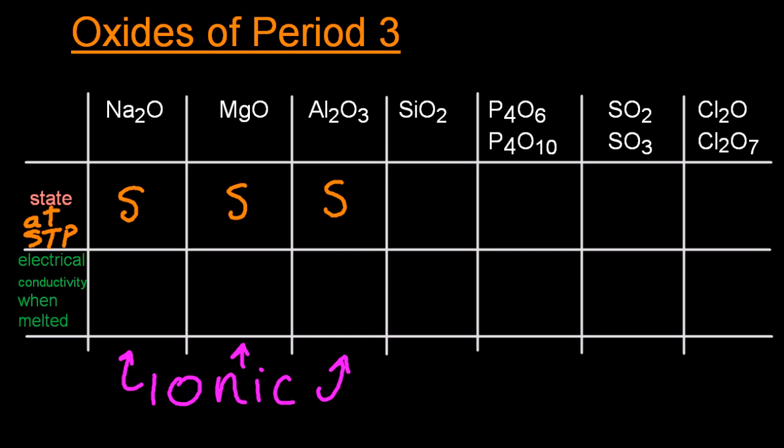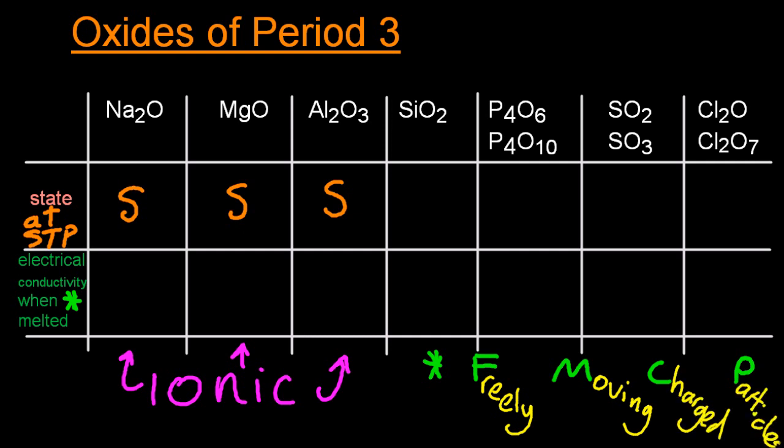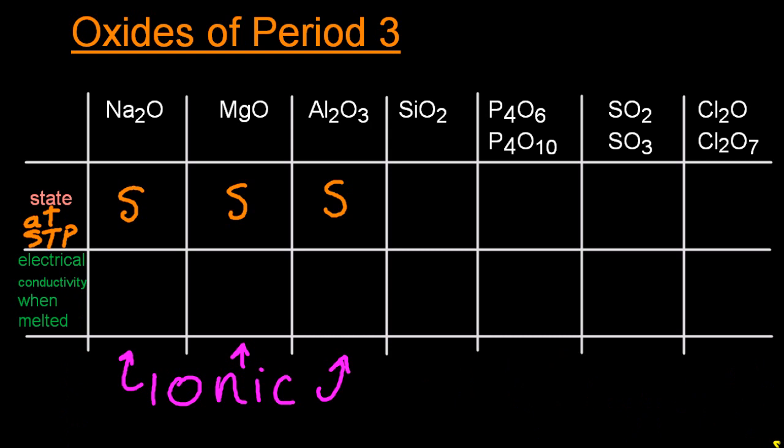For something to conduct electricity, it needs freely moving charged particles that allow electricity to be conducted. They're freely moving when they're melted. Ions are charged particles. So the conductivity of those three is good when melted.